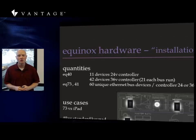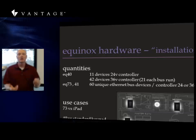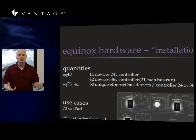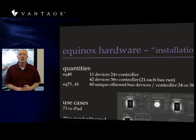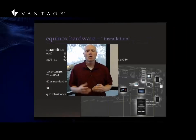On a 24-volt controller, I can only have 11 of those devices on the entire system, which would mean no other keypads — that's the maximum draw of 35 watts available on the 24-volt. With the 36-volt controller, that would definitely be the recommended controller because of its much larger power supply; you could have up to 42 four-zeros on an Infusion 36-volt controller. The 7.3 and the 4.1 are limited to 60 unique Ethernet bus devices per controller, which is a standard Ethernet-type limitation.